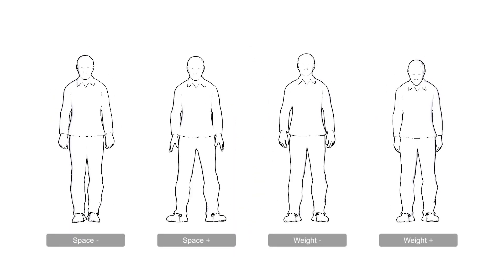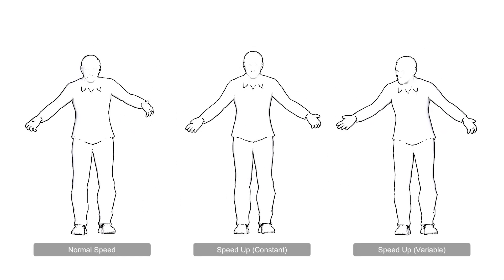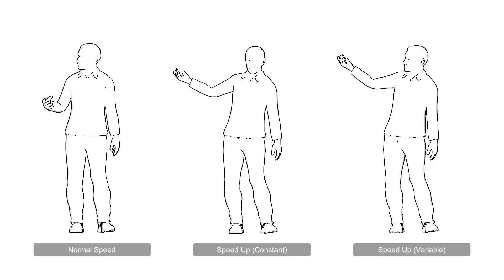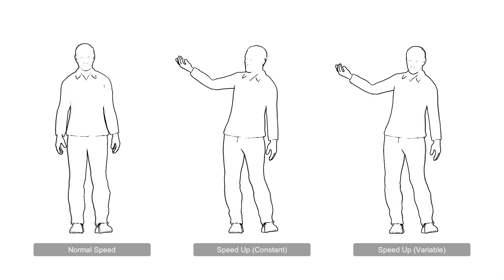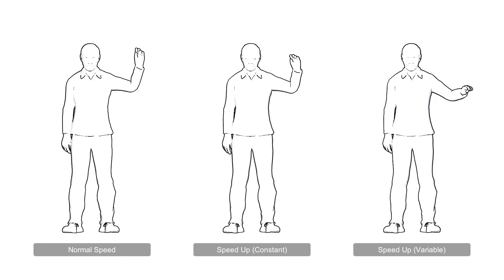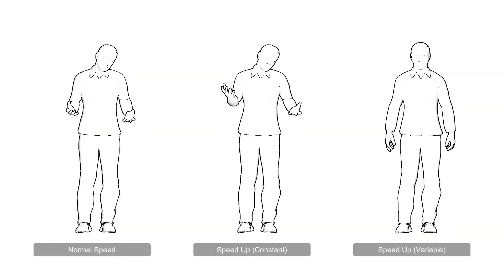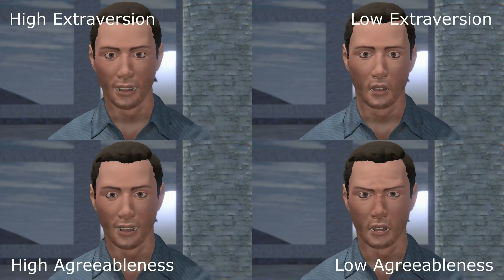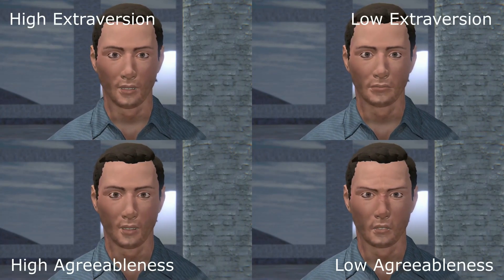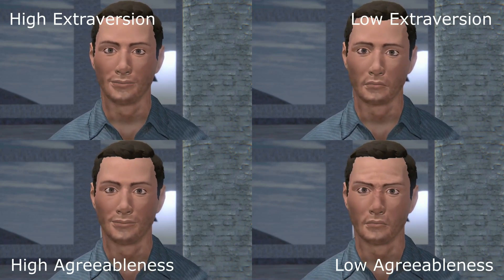We blend various bone rotations to add the impact of the weight and space components to the posture. To simulate LMA flow, we add random limb rotations. We adjust animation speed in a variable manner to represent LMA time, using the base animation's average hand speed per time step as a reference to set the target animation speed accordingly, which helps preserve the essence of the base animation. Each facial expression is related to various personality factors based on one of our experiments; each time the agent starts to speak, we adjust its facial expression to add the desired personality cues.